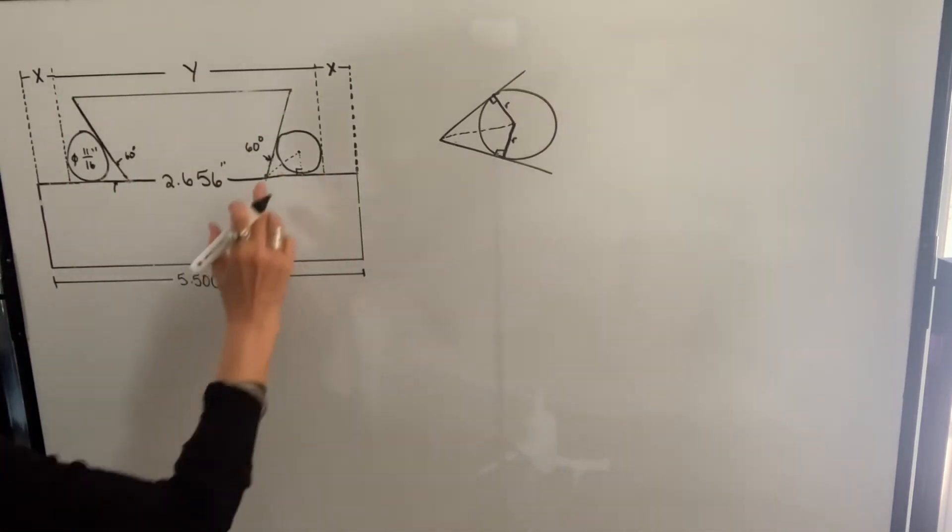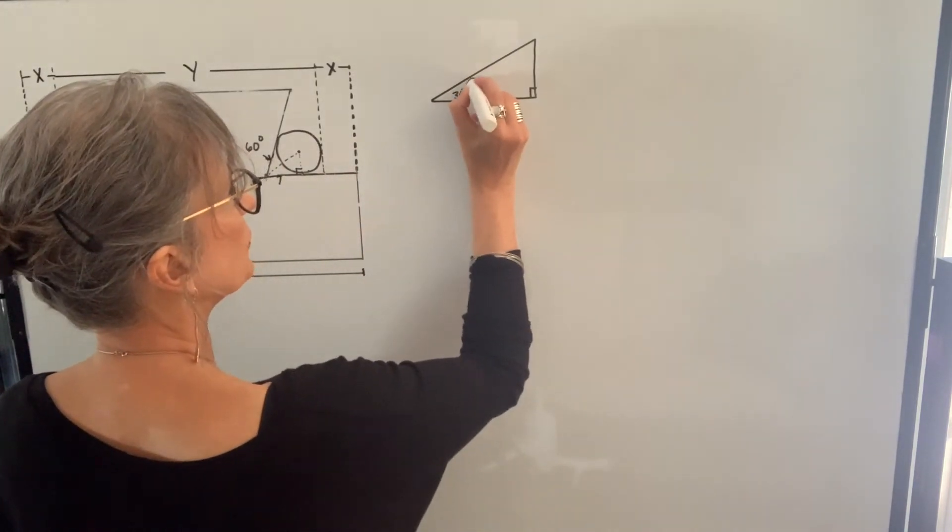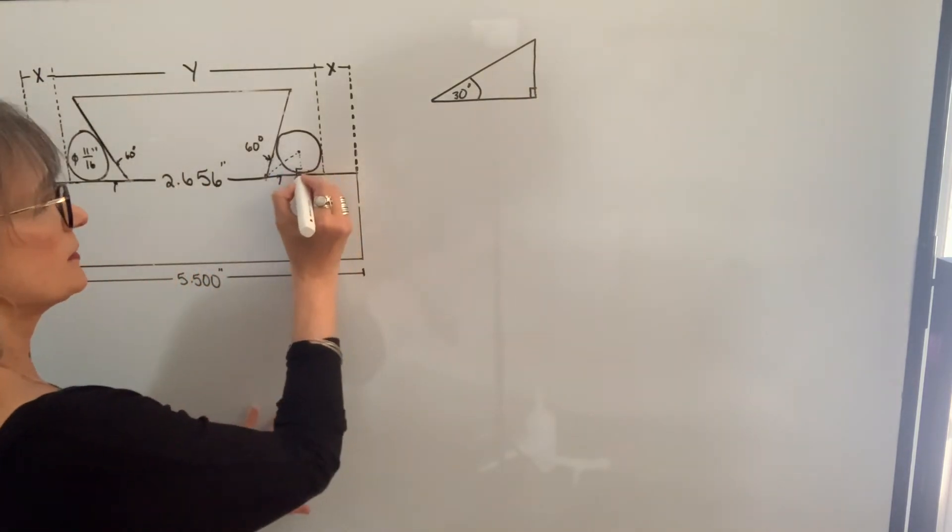Then I can use that distance and that distance with this distance to find y. So let's start with this triangle. My dovetail angle is 60 degrees, so when I bisect that, that would be 30 degrees. Here's my right angle.